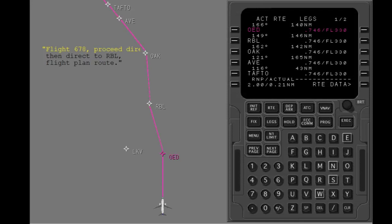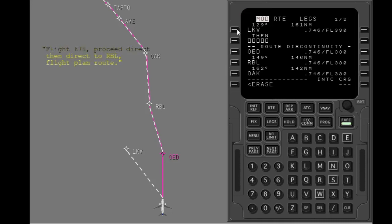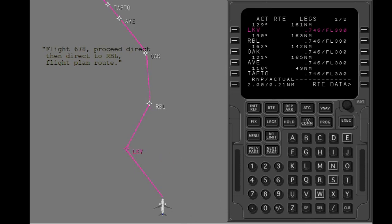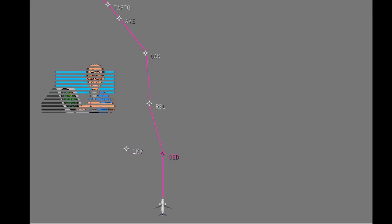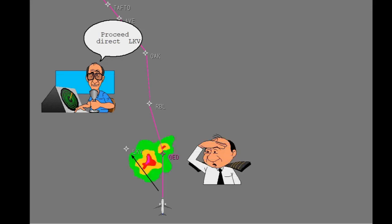ATC has instructed you to fly direct to Lakeview. To make a course direct to Lakeview, put LKV into the active waypoint line. The FMC computed direct course to Lakeview shows above LKV. Now connect the route discontinuity. Execute the modification. Now let's go back to your initial route and look at a different situation.